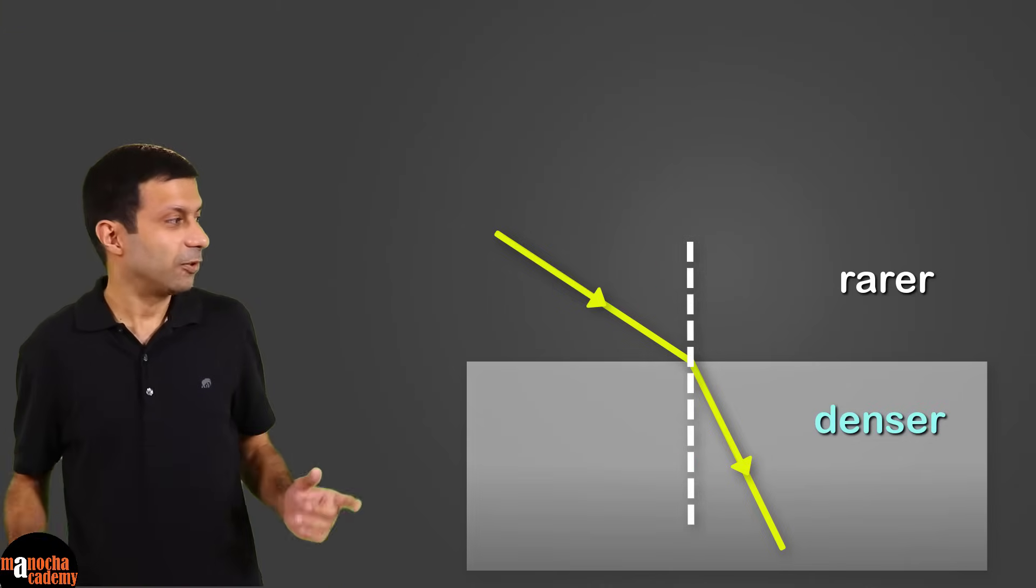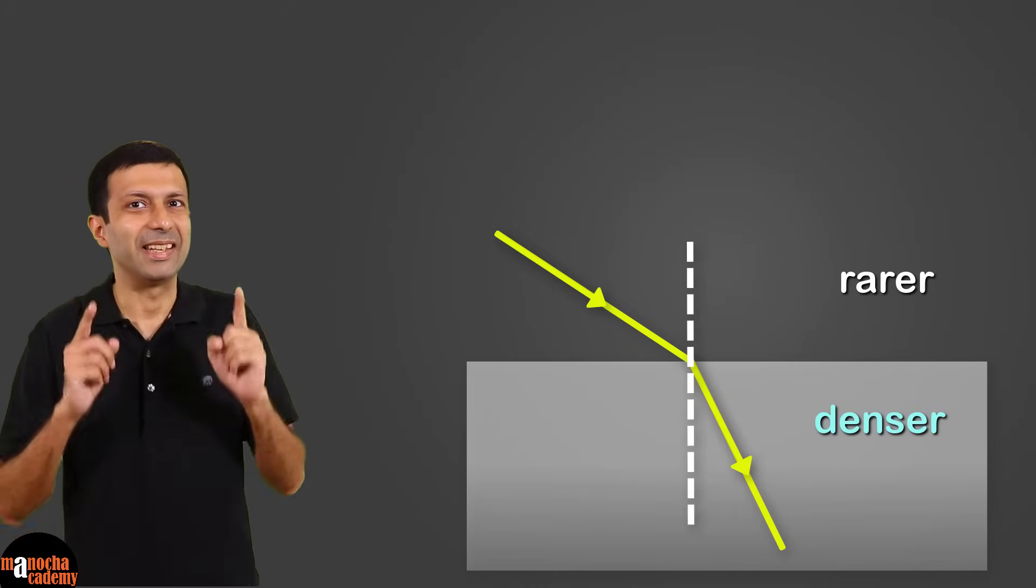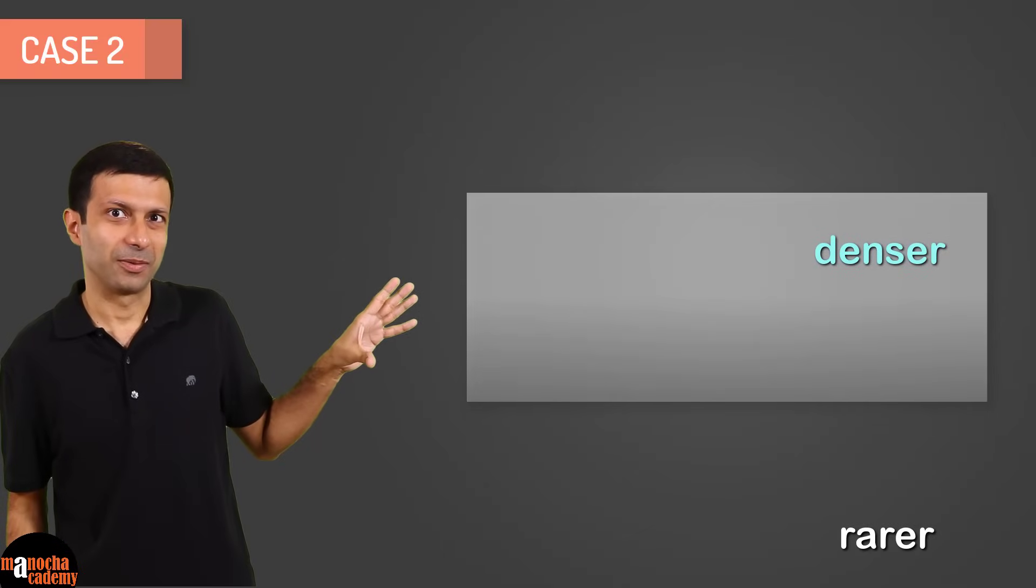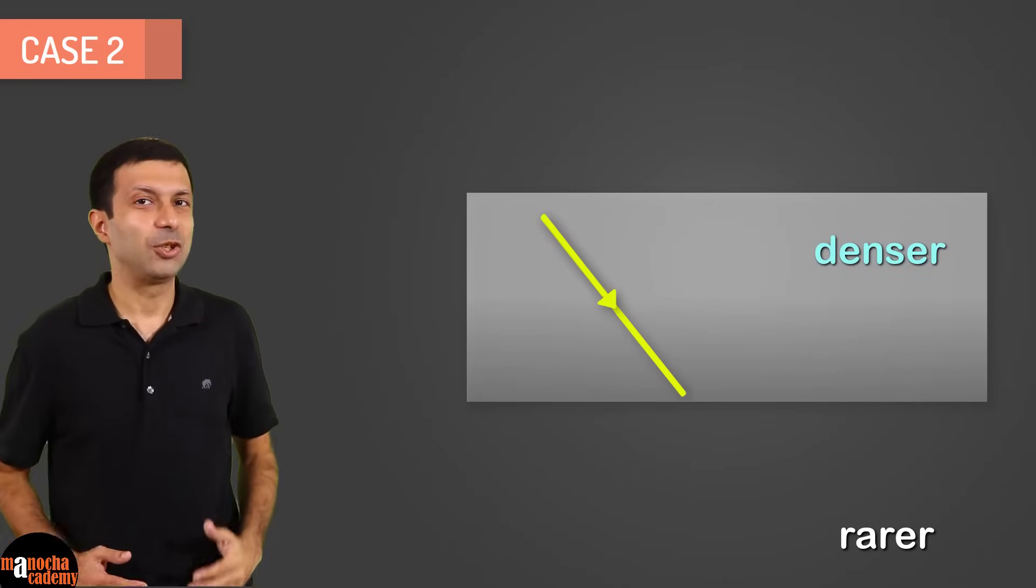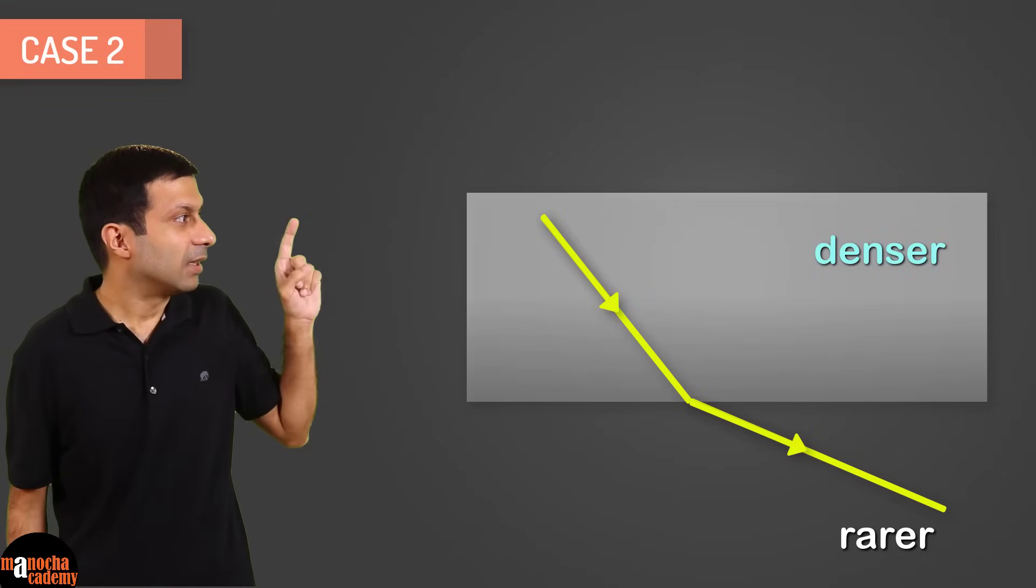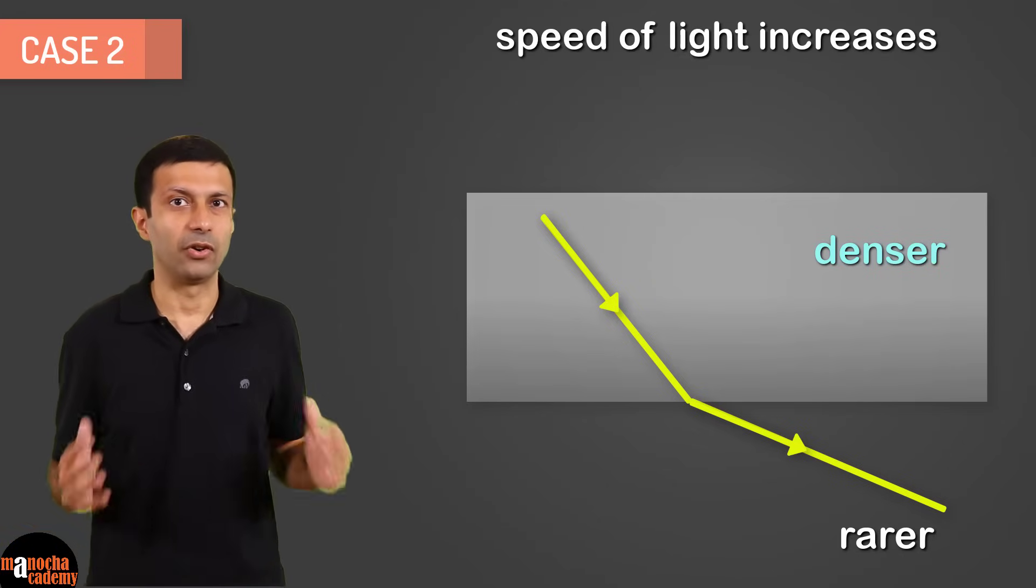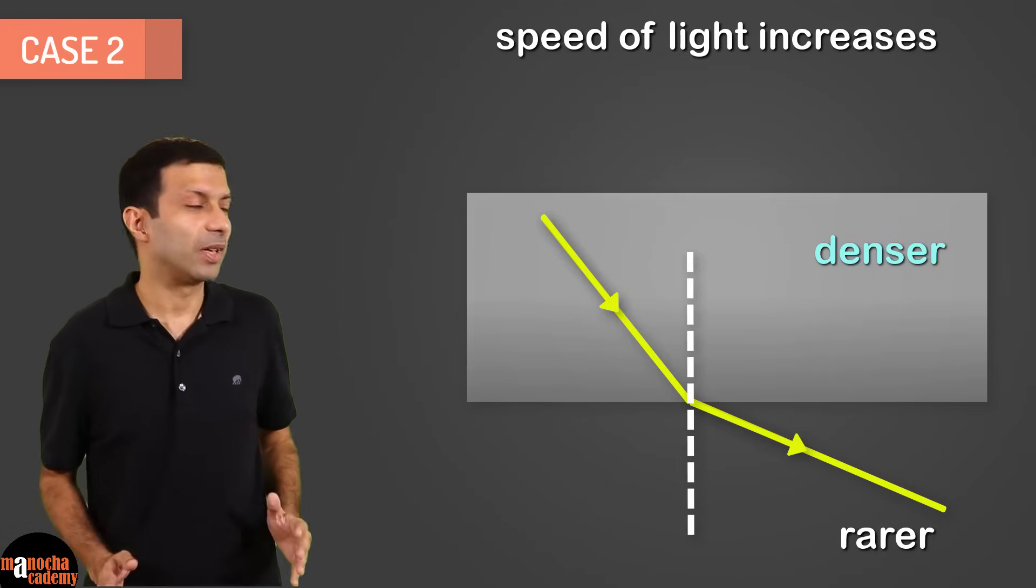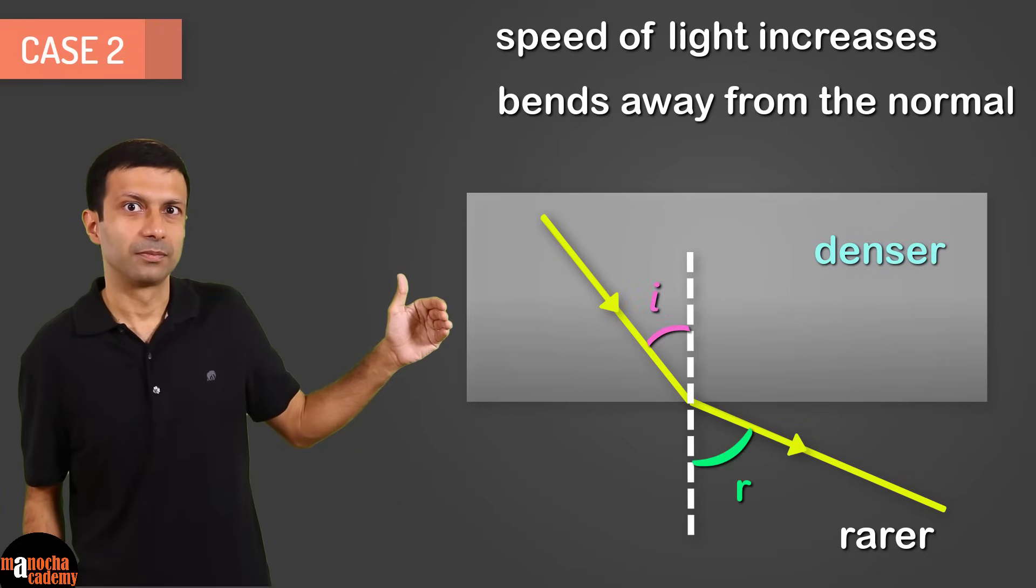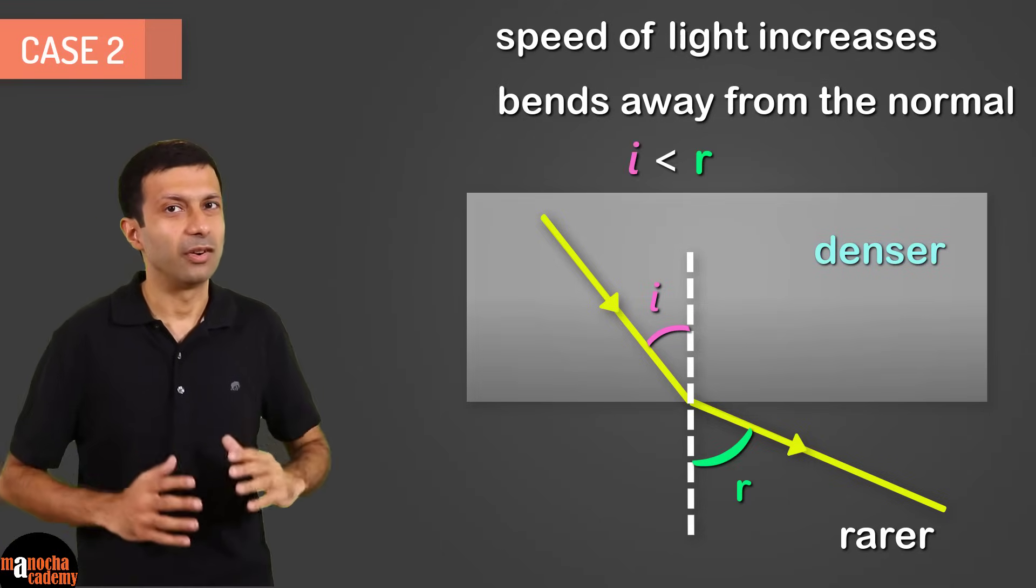Now can we make the light bend away from the normal? The answer is yes, we just need to switch the two materials. So as you can see, this is our case two. When light travels from a denser to a rarer medium, the speed of light increases. And as you can see, the light bends away from the normal. And the angle of incidence is less than the angle of refraction here.